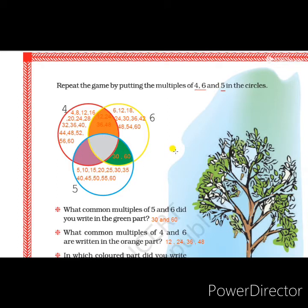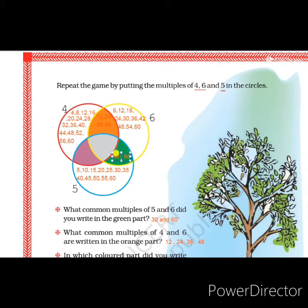For number 4, a red circle is given; for number 5, a blue circle; for number 6, a yellow circle. The common multiples appear in the middle portions: orange shows common multiples of 4 and 6; green shows common multiples of 5 and 6; purple shows common multiples of 4 and 5; and the grey part shows common multiples of all three numbers — 4, 5, and 6.